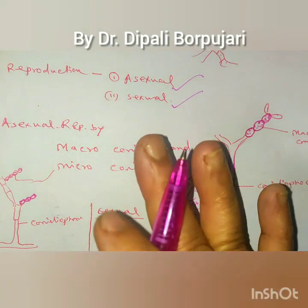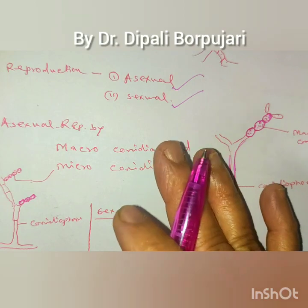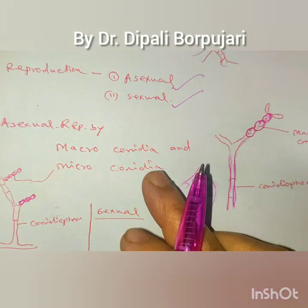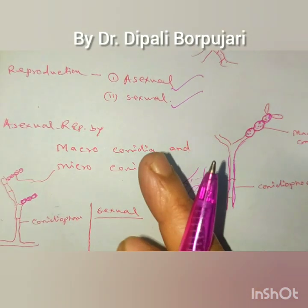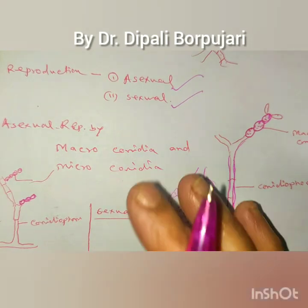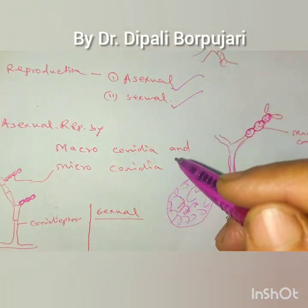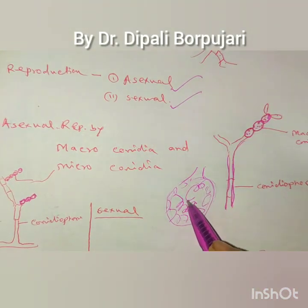The male sex organ is absent, but micro and macroconidia act as the male sex organ. They act as spermatia and fertilize the ascogonium.